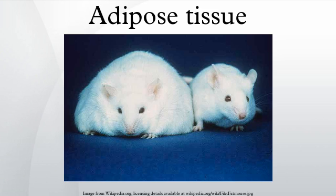Adipose tissue has a density of 0.9 grams per milliliter. Thus, a person with more adipose tissue will float more easily than a person of the same weight with more muscular tissue, since muscular tissue has a density of 1.06 grams per milliliter.